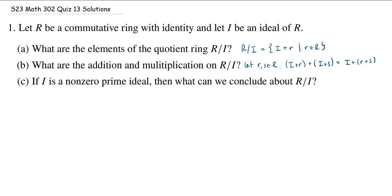What if we want to multiply? Well, it's very easy. Instead of translating by R plus S, we just translate by R times S. Now, of course, showing that these actually are binary operations on R mod I requires a proof that we did in class.